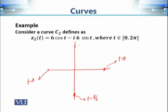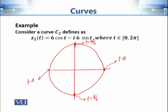At t = 3π/2 we get yet another value. When we join these points we again get a circle. In the previous example we were traveling counter-clockwise, but in this example we are traveling in the clockwise direction.